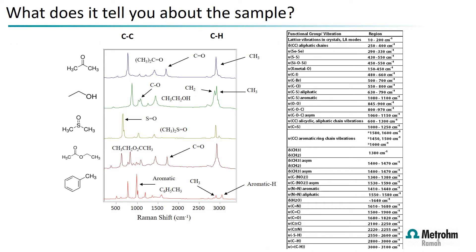So what does it tell you about the sample? We see sharp peaks which are due to the functional groups on the sample being tested. Here you see a selection of different molecules with different functional groups, and we see a clear difference in the fingerprints associated with these groups depending on the structure of the material.